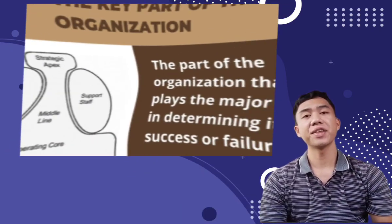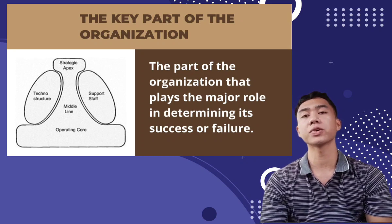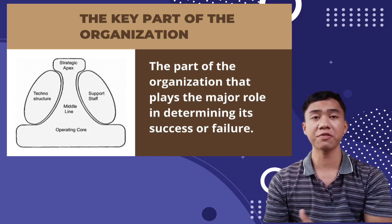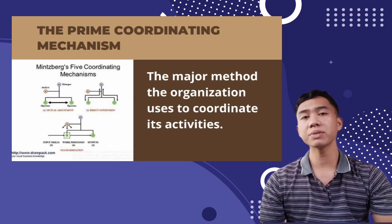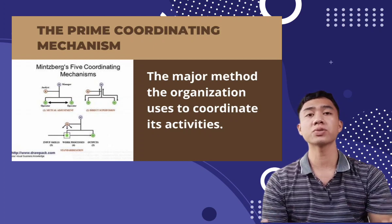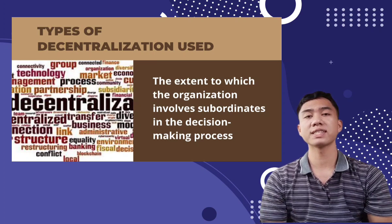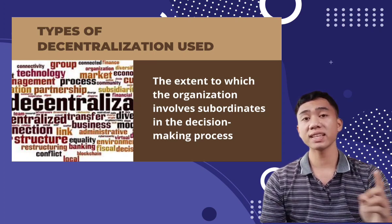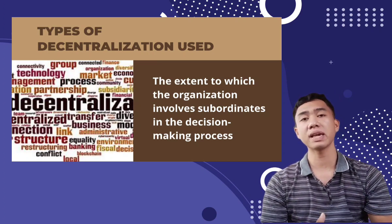Henry Mintzberg suggests that organizations can be differentiated along three basic dimensions. Number one, the key part of the organization that plays the major role in determining its success or failure. Number two is the prime coordinating mechanism, that is the major method the organization uses to coordinate its activities. And number three, the type of decentralization used — the extent to which the organization involves subordinates in the decision-making process.